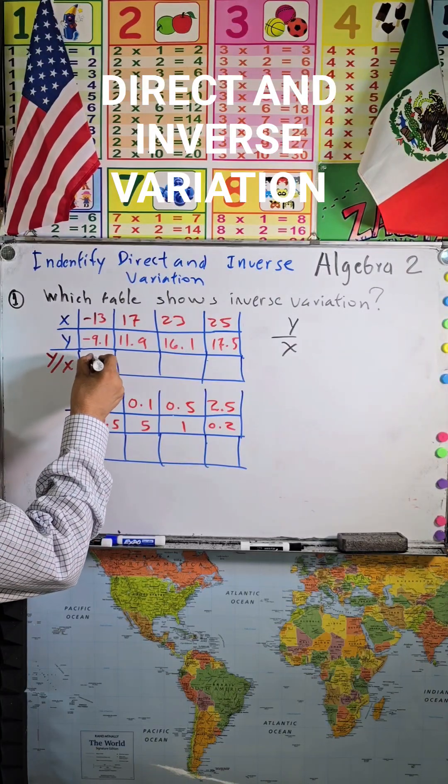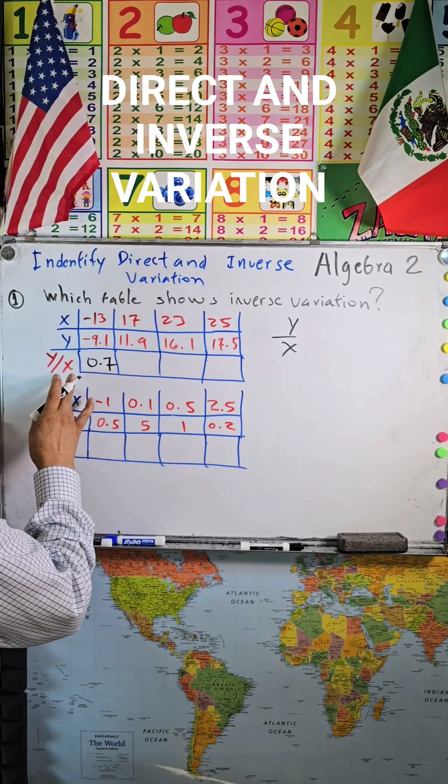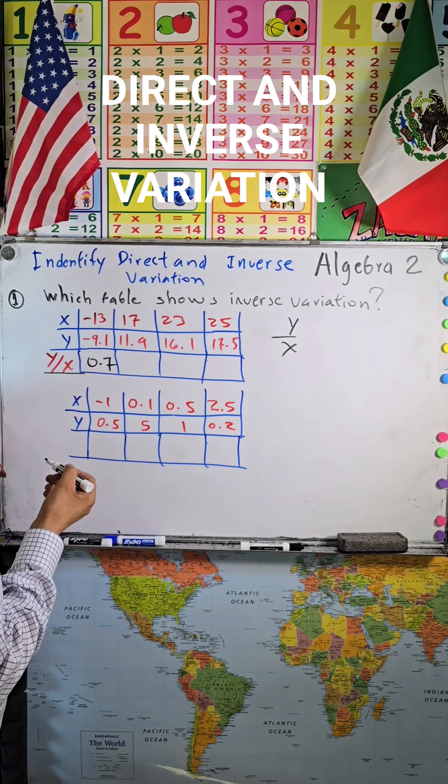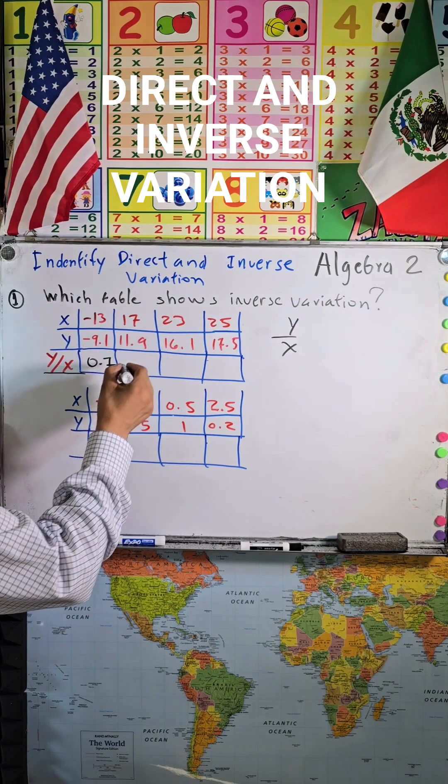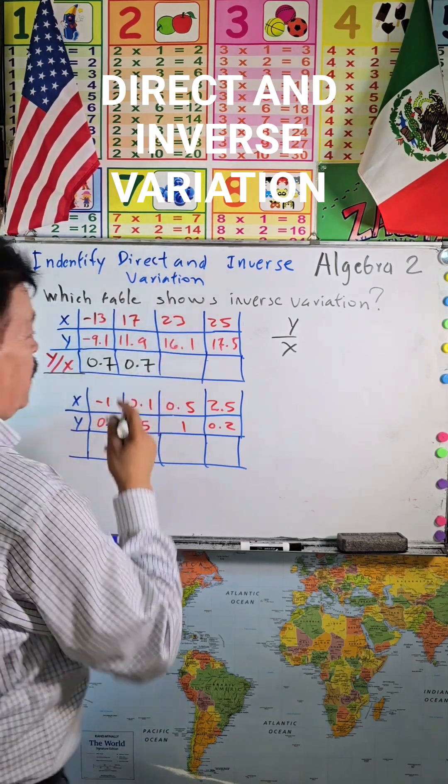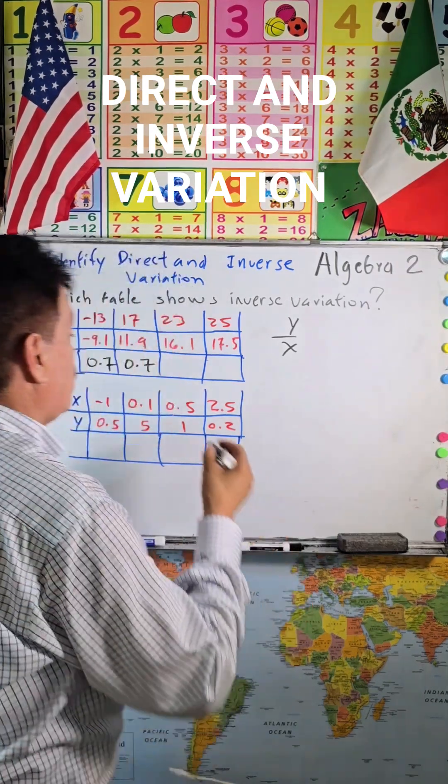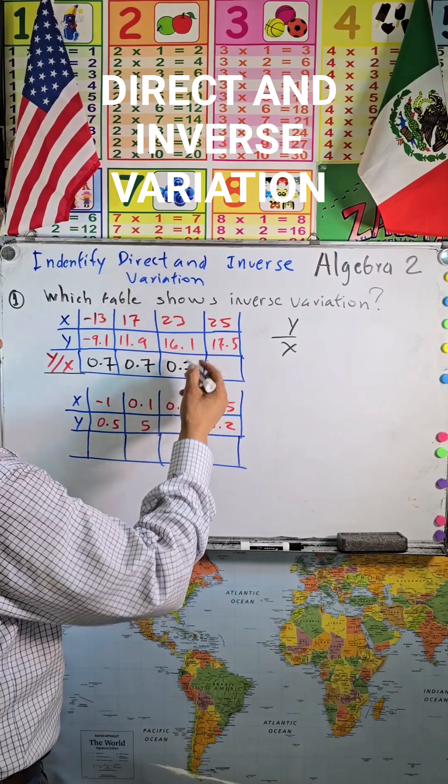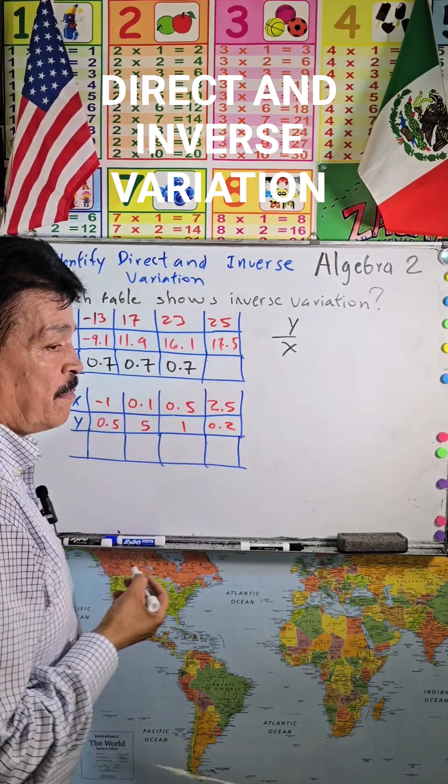Where is the answer? The answer is 0.7. You divide 17 by 11.9, again you have 0.7. You divide 23 by 16.1, so it's again 0.7. Look at the formula, so here 25 divided by